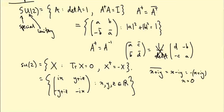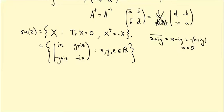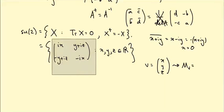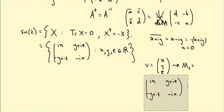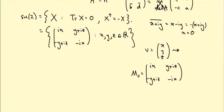I'll introduce notation: for a vector v = (X, Y, Z) ∈ R³, I write M_v for the matrix [iX, Y+iZ; −Y+iZ, −iX]. This is convenient for expressing the Lie bracket. As an exercise, one can show the Lie bracket on su(2) satisfies [M_u, M_v] = M_{2u×v}, where × is the vector cross product.